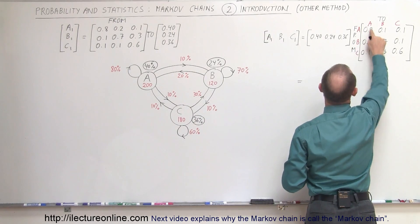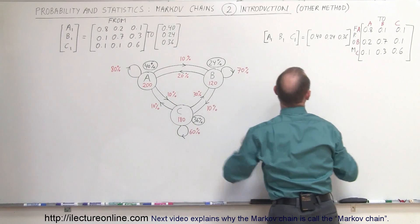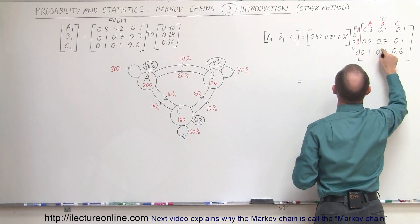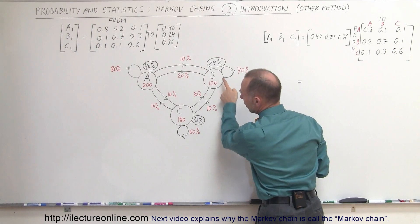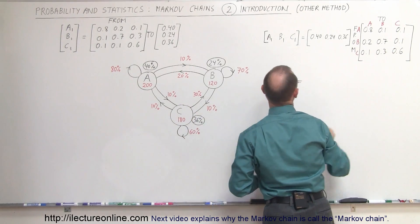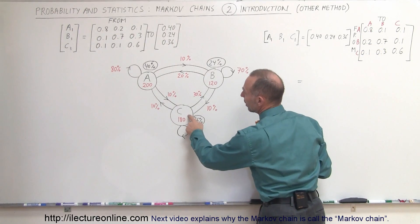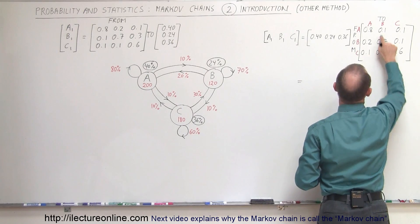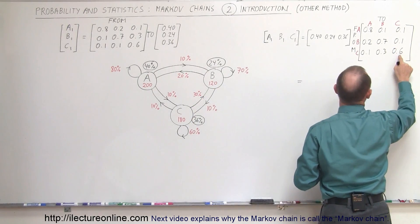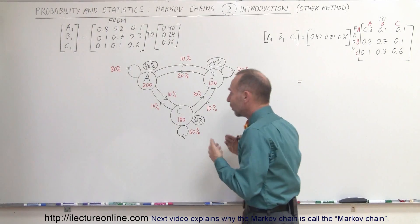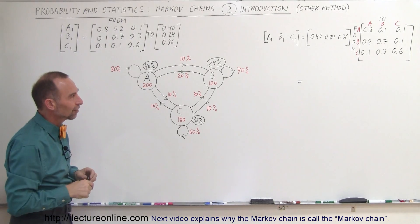From B to A is 20% — does that match? From B to A, 20% right here. From B to B is 70%. And from B to C is 10%. Now from C to A is 10%, from C to B is 30%, and from C to C is 60%. So again, it looks exactly the same — it's just that the matrix is set up a little bit differently.